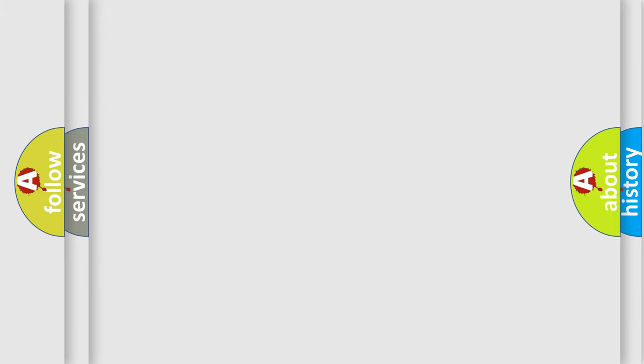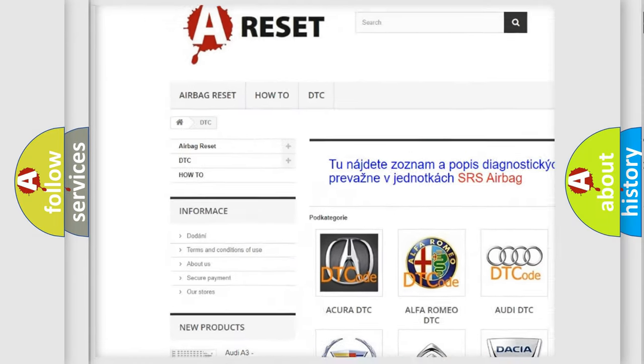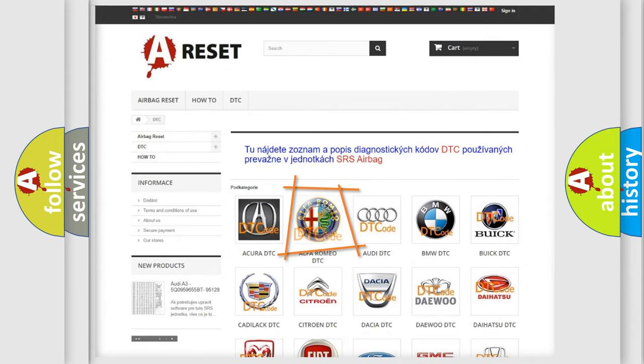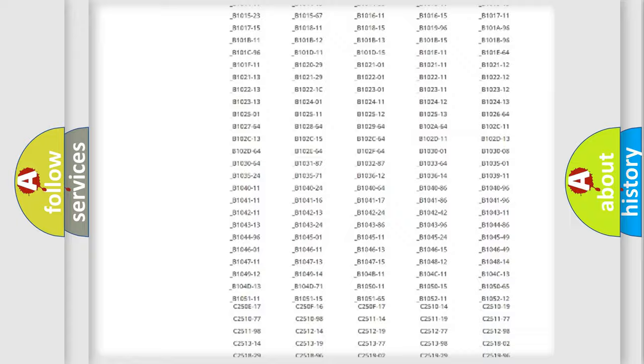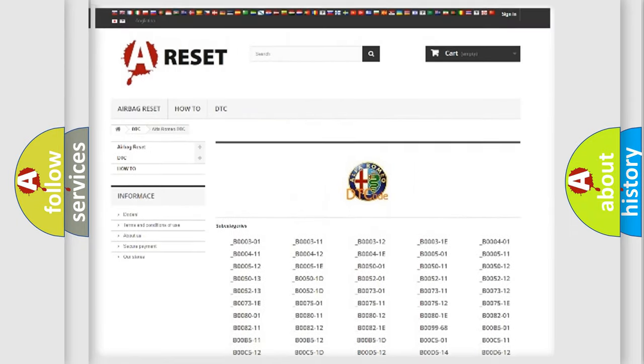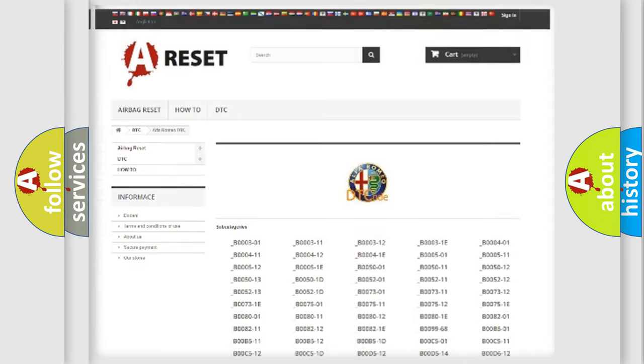Our website airbagreset.sk produces useful videos for you. You do not have to go through the OBD2 protocol anymore to know how to troubleshoot any car breakdown. You will find all the diagnostic codes that can be diagnosed in Alfa Romeo vehicles. Also many other useful things.